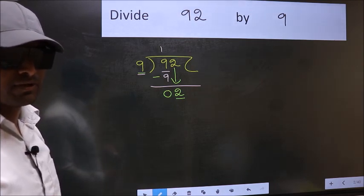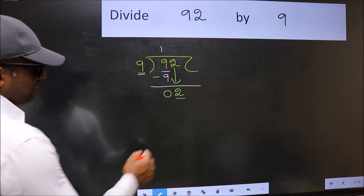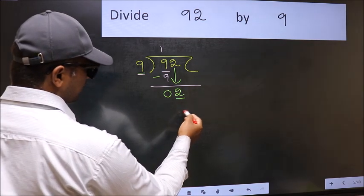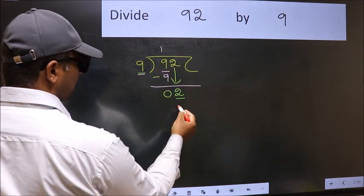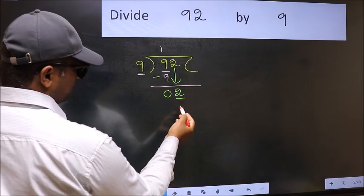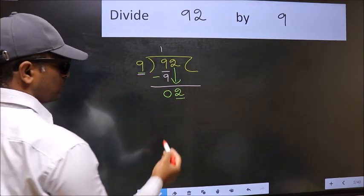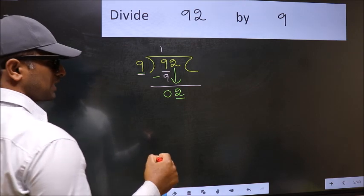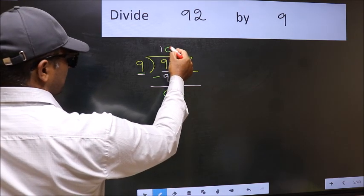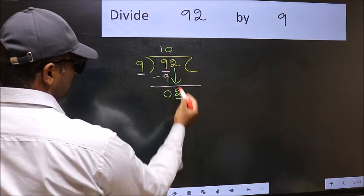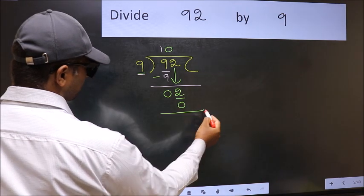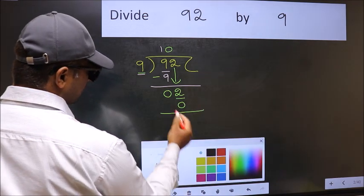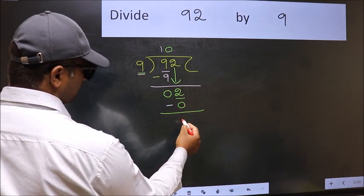Instead, what you should think of doing is, which number should we take here. If I take 1 here, we will get 9. But 9 is larger than 2. So what we should do is, we should take 0. So 9 into 0, 0. Now we should subtract. 2 minus 0, 2.